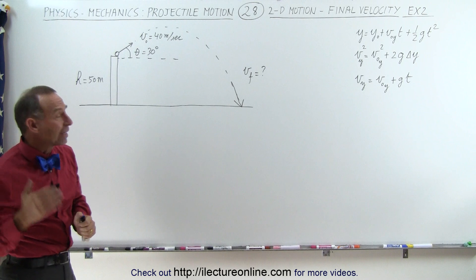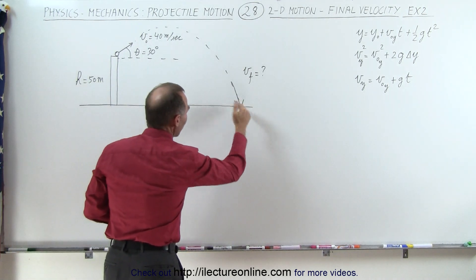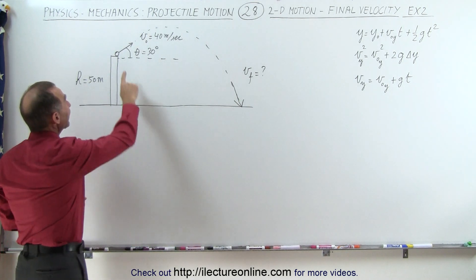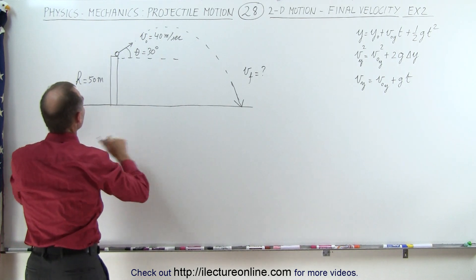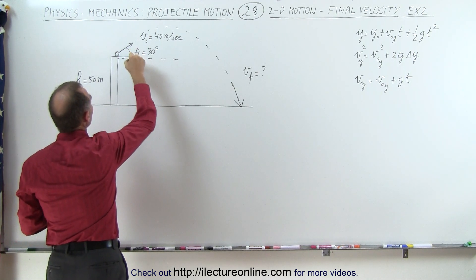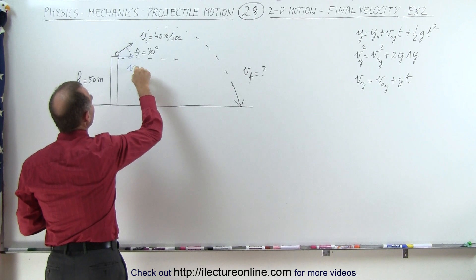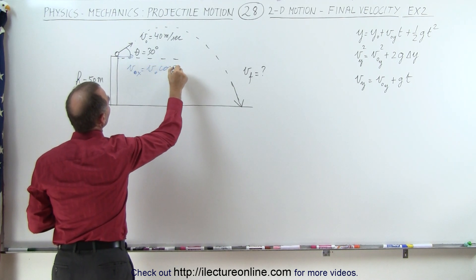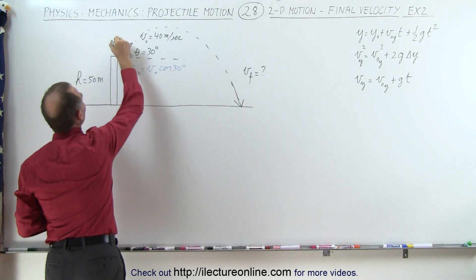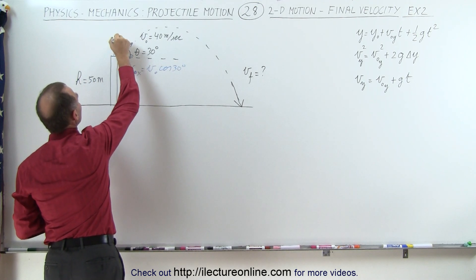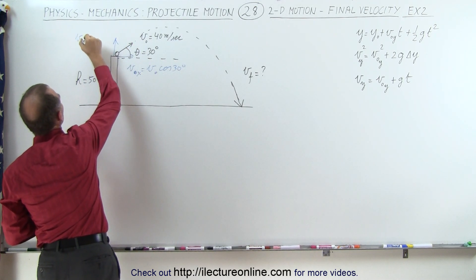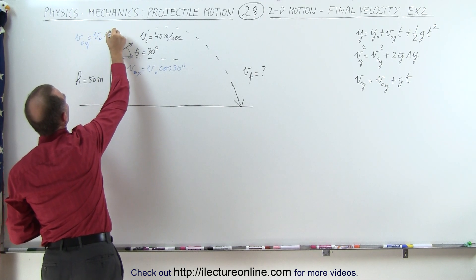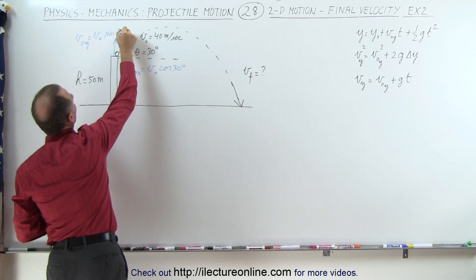To find the final velocity of the projectile when it hits the ground, we first need to find the x and y components of the initial velocity. The x component is v_initial times the cosine of 30 degrees, and the y component is v_initial times the sine of 30 degrees.